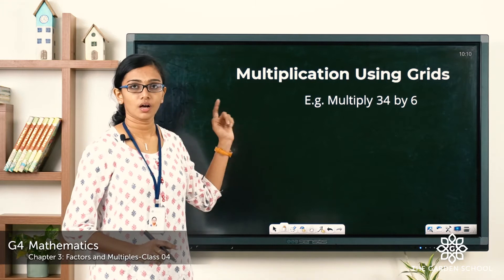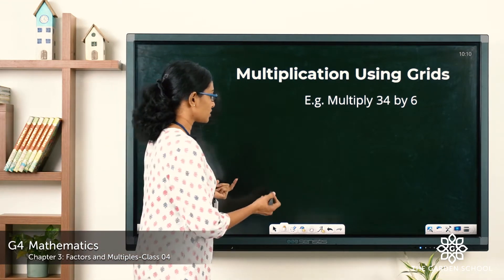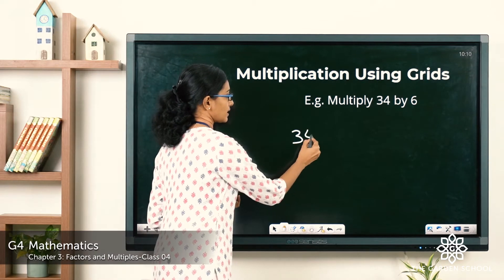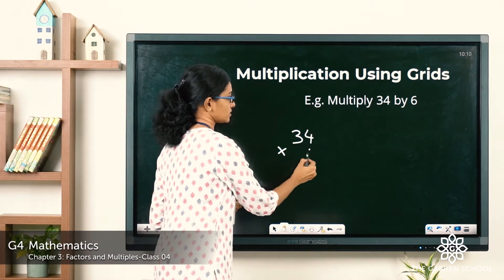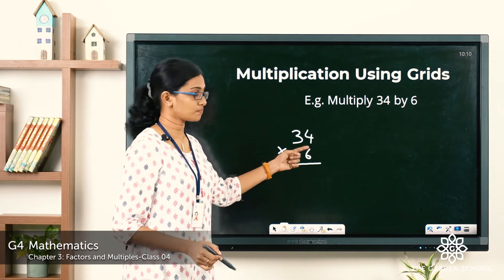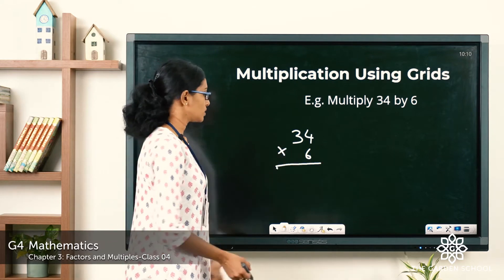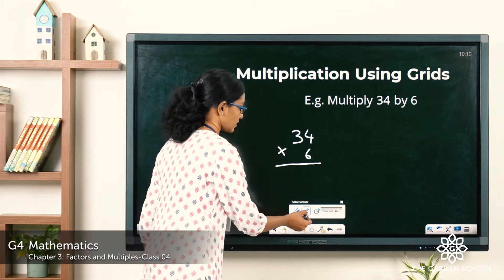Look at this example, multiply 34 by 6. So how do you usually multiply these numbers? We write the numbers column wise, then you proceed with the multiplication of place values of the multiplier with each digit of the multiplicand. So let's learn a different method today.